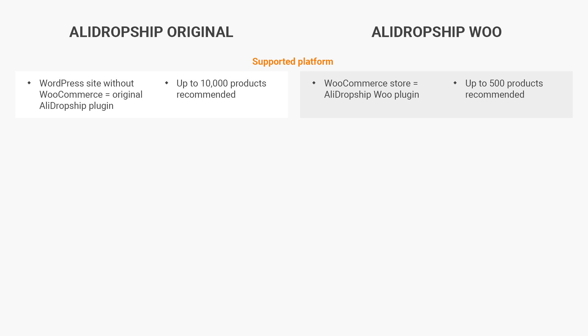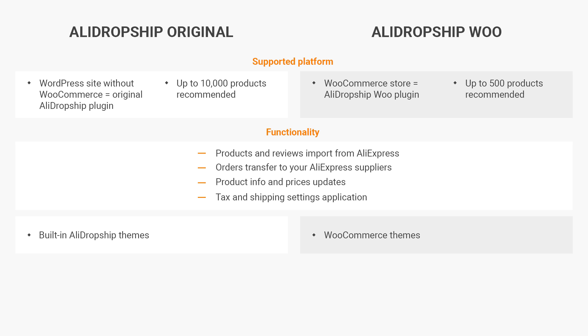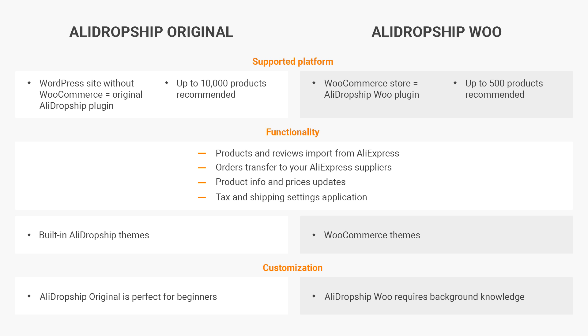If at least two statements are true for you, go for AliDropship Woo plugin. If not, the original version of AliDropship plugin is the perfect choice. Please note: it is not possible to install both versions on the same website, and the same license cannot be used for two websites. Select only one AliDropship plugin version and install it on only one website. To sum up: AliDropship Original works on bare WordPress; AliDropship Woo works with a WordPress site that has WooCommerce installed. For a large general store, choose the original version since it supports up to 10,000 items. The Woo version works for a niche store with up to 500 items. WooCommerce requires some experience or willingness to learn, so if you're a newbie, please choose AliDropship Original – it's just easier for beginners. Check out the designs of both versions to find the one you like most.